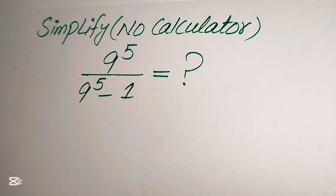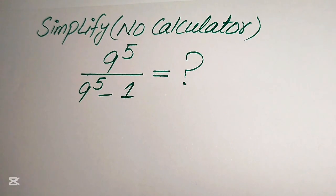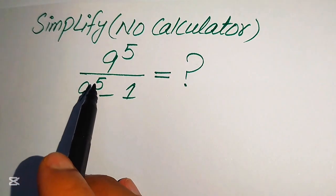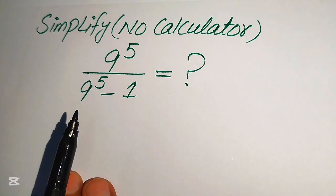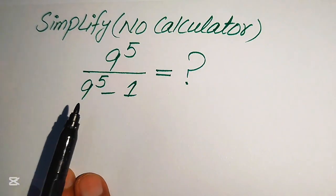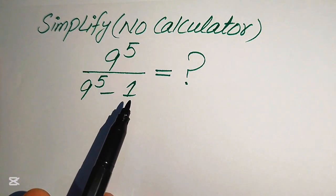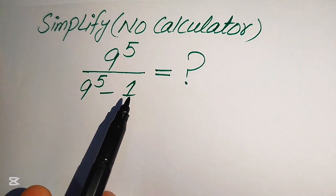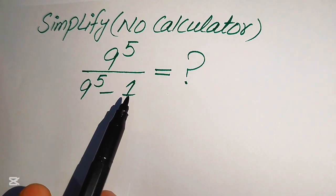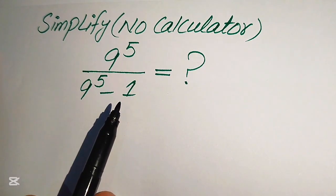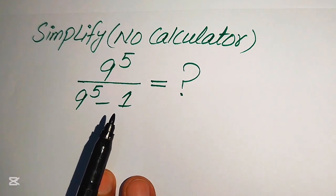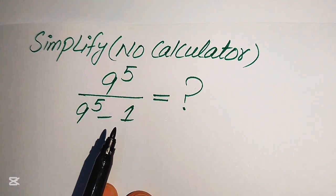Hello everyone, today I want to show you how to simplify this algebraic expression without using a calculator. We have 9 to the power of 5 divided by 9 to the power of 5 minus 1, and we will write this into simplified form. If you have any other method in mind, please don't hesitate to write it in the comment section.